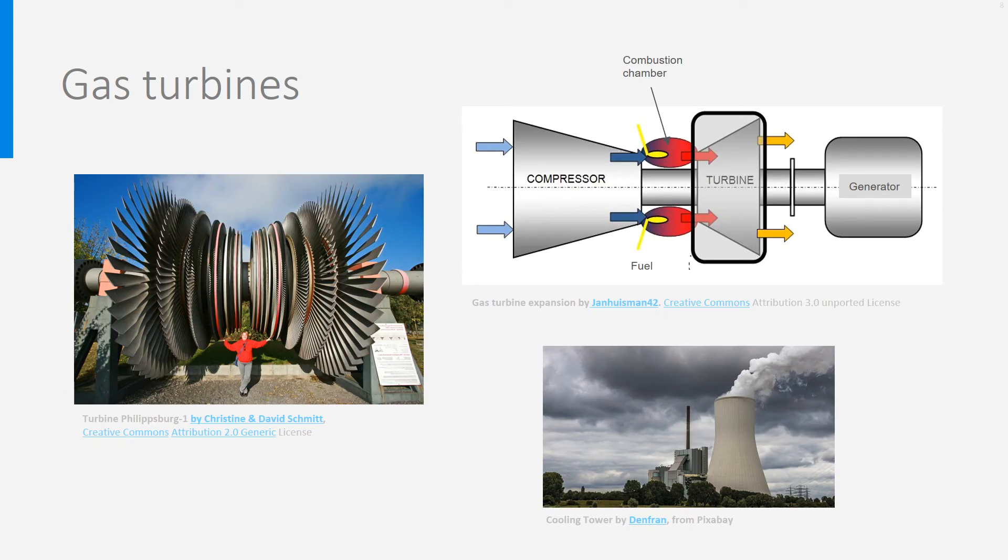You see here left an example of a large turbine, and right above a more realistic scheme of the working principle. You see here that the combustion chamber does not really look like a boiler, and you see also that the compressor is coupled to the same shaft as the generator, using a part of the energy delivered by the hot gases to the turbine. Below, a cooling tower used to cool the heat exchanger. These gas turbines can be found in very diverse powers, from small to large.